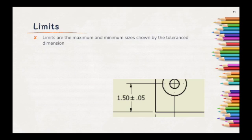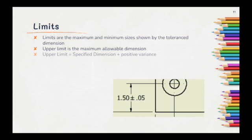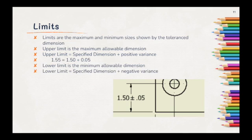Now let's take a look at limits. Limits are the maximum and minimum sizes shown by the tolerance dimensions. These are different than a limit dimension because these have to be calculated. The upper limit is the maximum allowable dimension, so the upper limit is the specified dimension plus the positive variance. In this case, it would be 1.55 because 1.50 plus 0.05 is equal to 1.55. The lower limit is the minimum allowable dimension, and it's calculated by adding the specified dimension plus the negative variance. We could also just subtract a positive value to get the lower limit. So here we have 1.45 as our lower limit because 1.50 plus negative 0.05 is equal to 1.45. We could also just subtract 0.05 from 1.5.